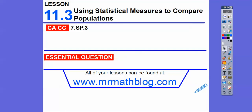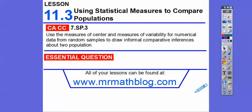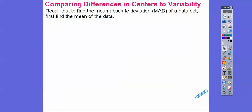Hey everybody, this lesson is about using statistical measures to compare populations. We're going to calculate the means of populations and then talk about how much they vary from the mean. We have this thing called the MAD — the mean absolute deviation from the mean, which tells us just how much they vary away. Our question is: how can we use statistical measures to compare populations?